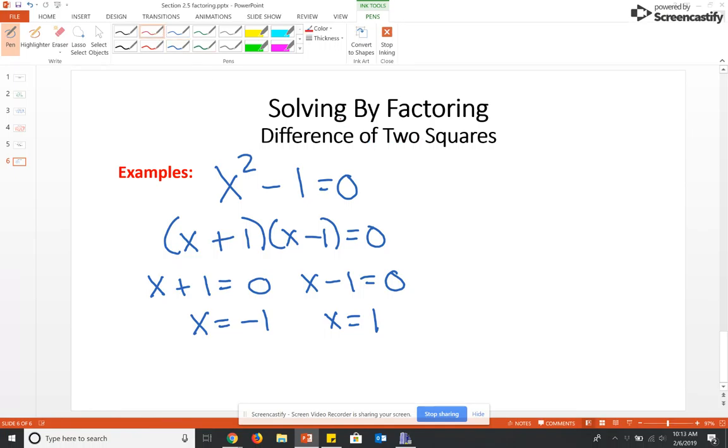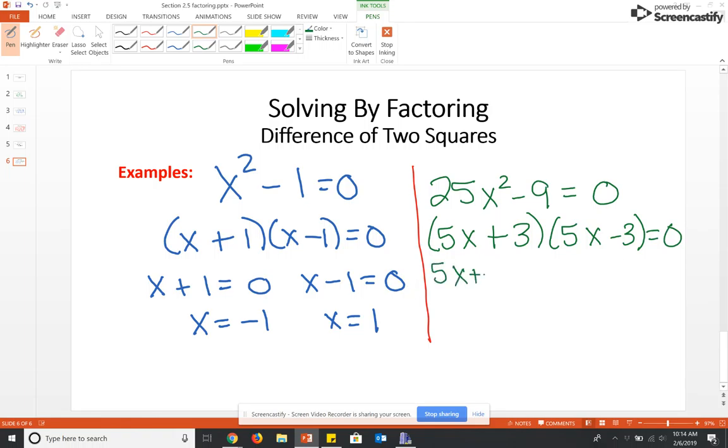Now that one might have been a little bit too simple, so let's do another one. Let's look at 25X squared minus 9 equals 0. Well, the square root of 25 is 5, so we're going to have 5X plus the square root of 9 is 3, and then we'll have 5X minus 3 equals 0. And then we're going to set each one of these to equal 0. And then we're going to subtract 3 and divide by 5, so negative 3 fifths. This one is where we're going to add 3 and divide by 5, and we get plus and minus 3 fifths. Over here we got plus and minus 1. When solving by the difference of 2 squares method, you're going to get plus and minus the same number.